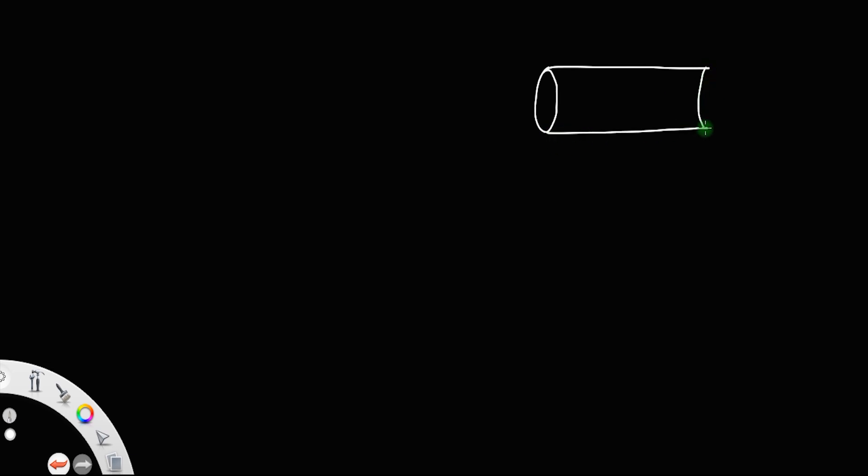Now let us derive an expression for conductivity of the semiconductor in terms of mobility. Suppose we have a cylindrical conductor semiconductor. In any semiconductor there will be an electron and a hole — a negatively charged electron and a positively charged hole. These two are the charge carriers in any semiconductor.